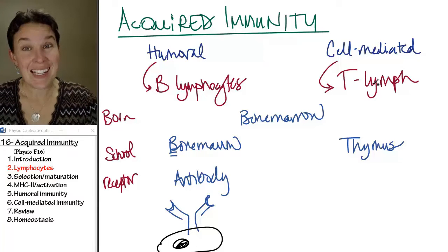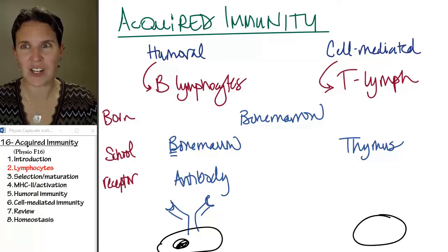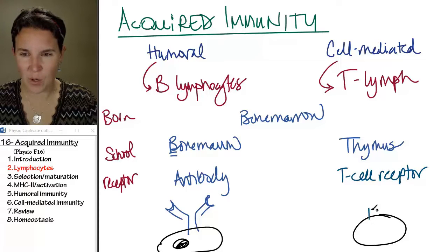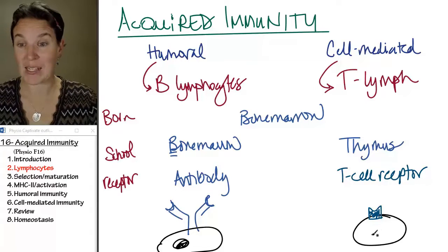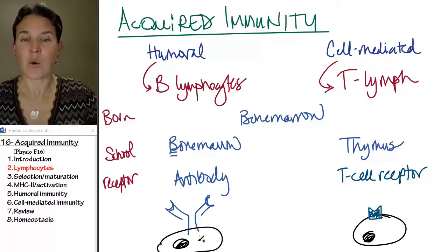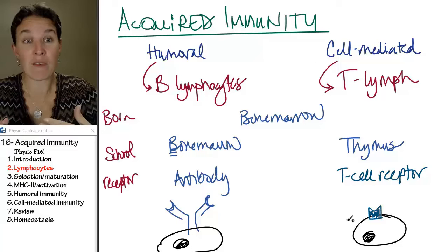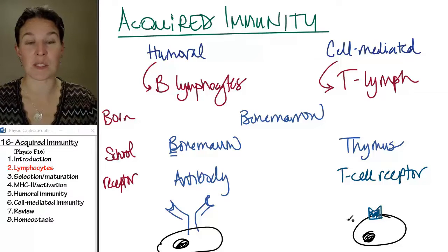The T lymphocyte also has a receptor, but it's called a T cell receptor. It looks more like what you'd imagine a normal cellular receptor would look like. It's also embedded in the cell membrane. So both B cells and T cells pick a very specific receptor molecule that they associate themselves with.